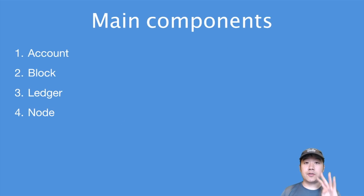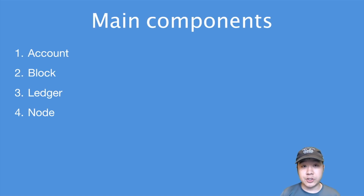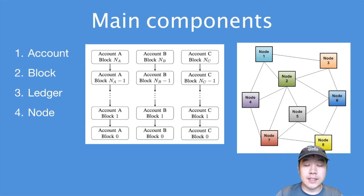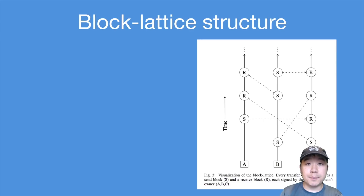The main components of Nano include four parts. One is an account, which is a single address generated by your public key. Two is a block, and every block has a single transaction in it signed by your private key. Three is a ledger, which is the global set of all accounts, each having its own blockchain or account chain. Four is the node, the software that verifies the ledger and controls any account that may be part of that node. The block lattice structure is a very important and unique part of their architecture.